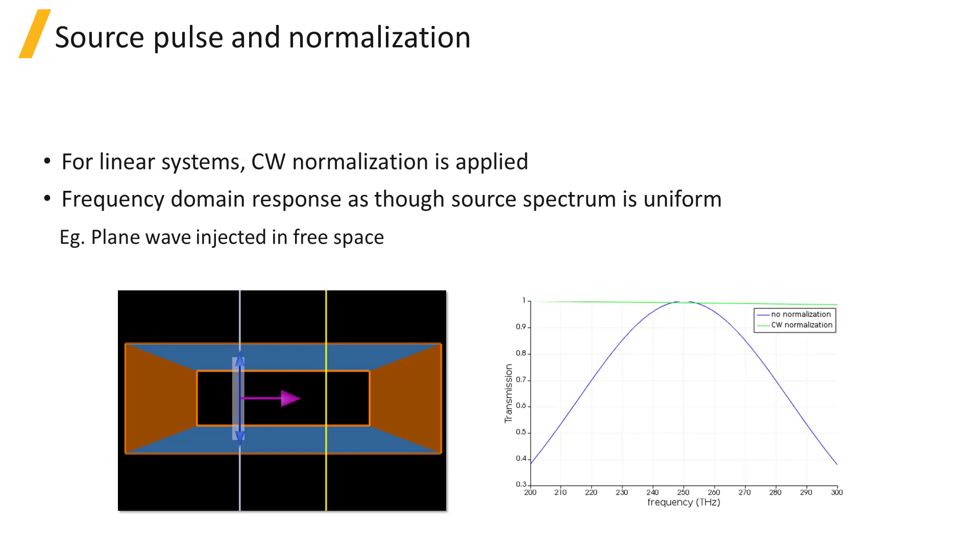In the example on this slide, a plane wave source is injected into free space and a monitor in front of the source measures the net power transmission. Since the light is injected into free space, 100% of the light will pass through the monitor.